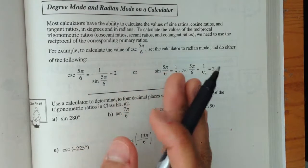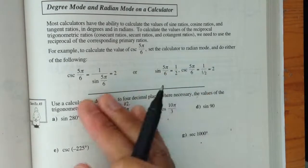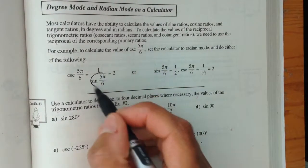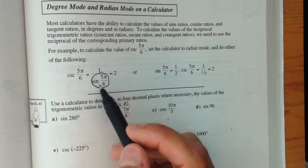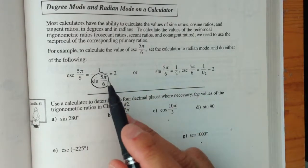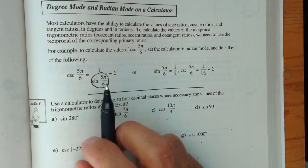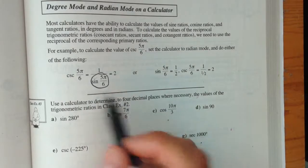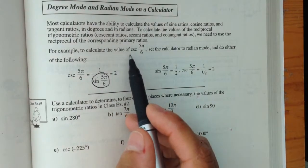There's no cosecant button, there's no secant button, and there's no cotangent button. In order to use any of those buttons, we need to use the reciprocal function of sine, so 1 over sine, or 1 over cosine, or 1 over tangent, in order to find out what the reciprocals of those values are.